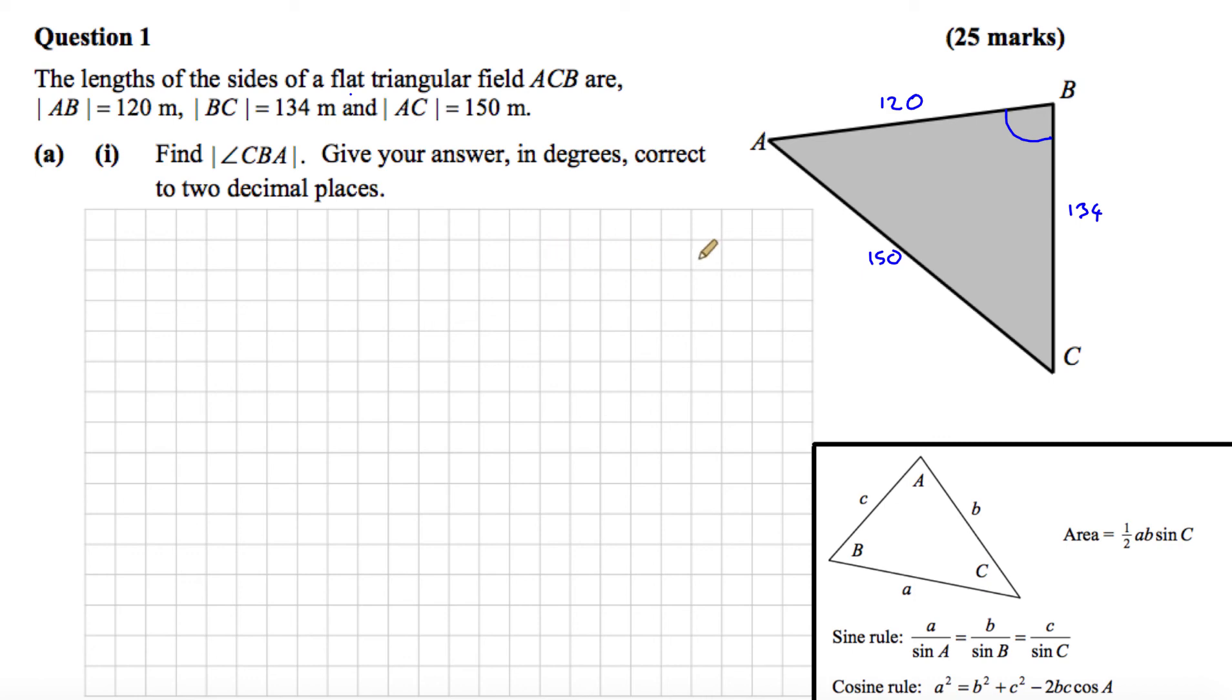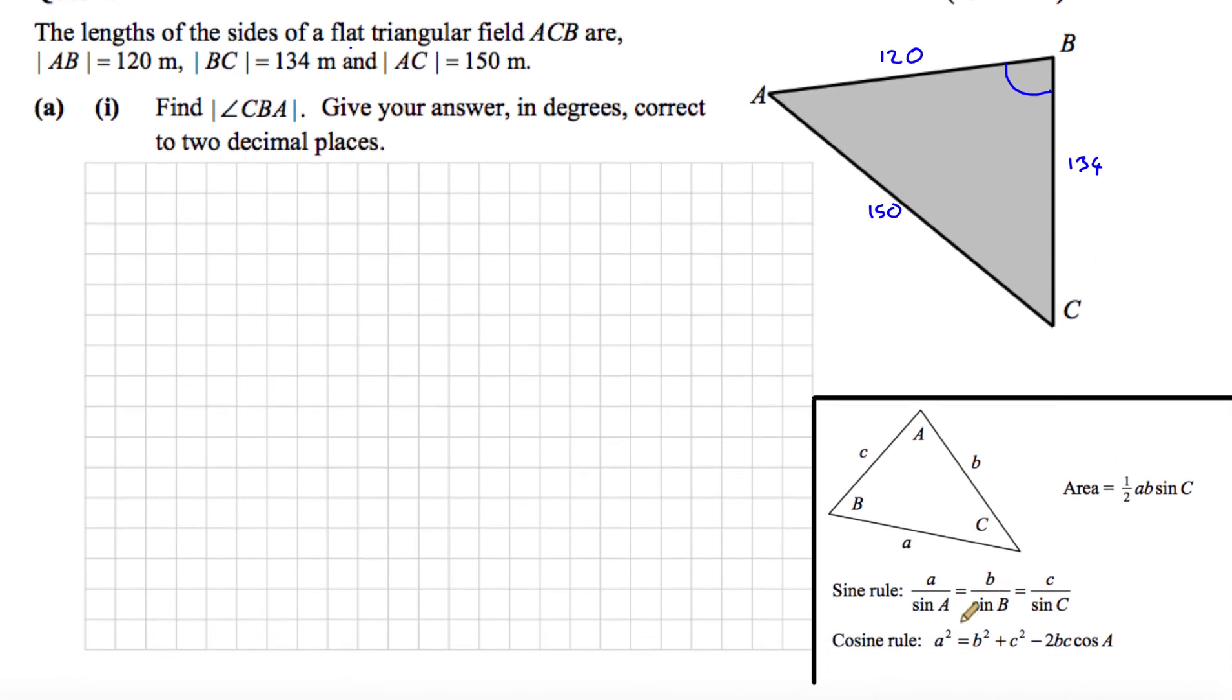So what I have is a non-right angled triangle. I'm given the three sides and I'm looking for an angle. If it's non-right angled, I'm thinking sine rule or cosine rule. If I'm given three sides and looking for the angle, that directs me to the cosine rule here.